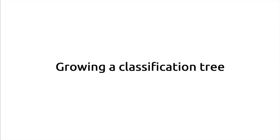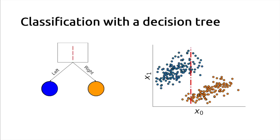So how do we grow a classification tree? Let's start with the use case of a classification problem. Here we have a small dataset with two groups of data points that can be either orange or blue. The goal is to predict the color, so the class of the data point. We have two input features, x0 and x1, which are numerical continuous variables, so we can represent them in a 2D plane.